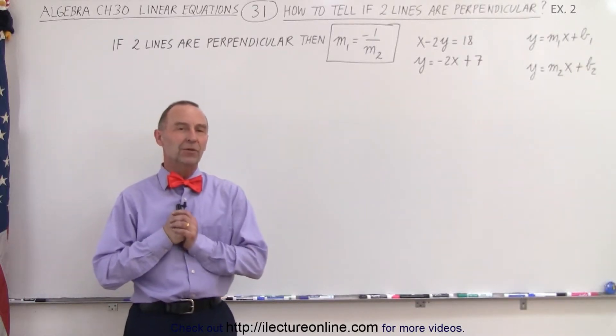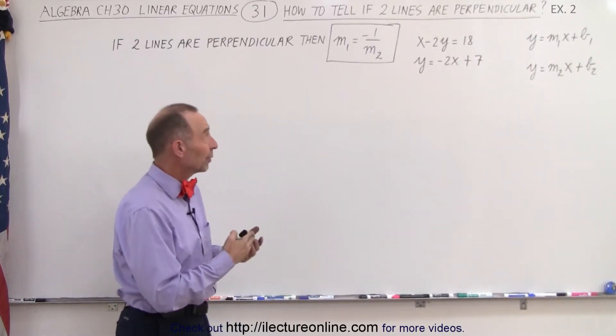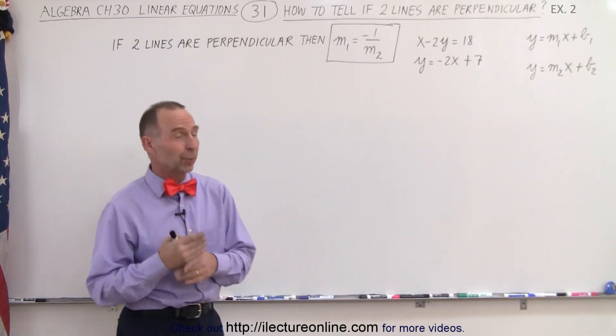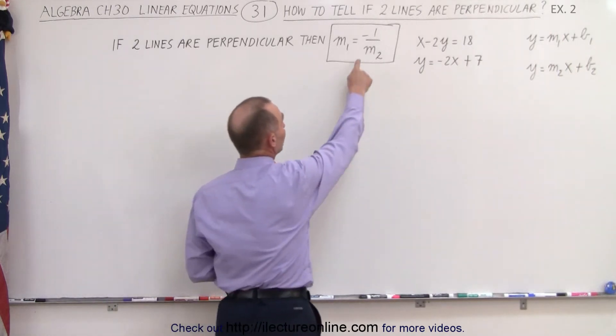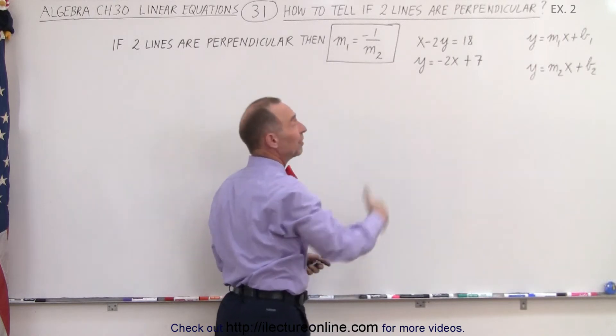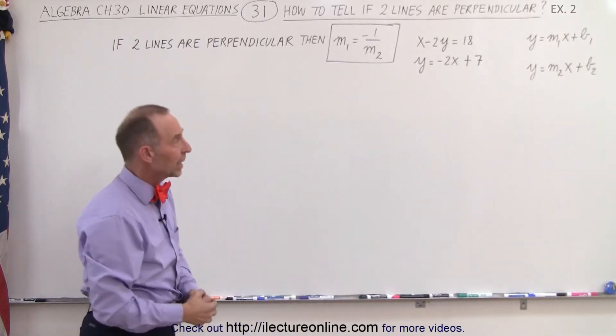Welcome to Electron Line. Here's another example to see if we can determine if two lines are indeed perpendicular, which means that they must meet this condition that the slope of the one must equal the negative inverse of the slope of the other.